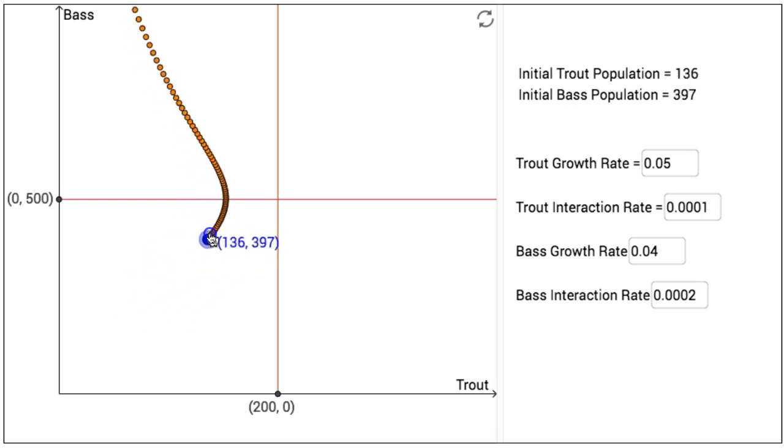If I drag that initial value point somewhere else, perhaps in the upper right quadrant of the graph, now my initial trout population is 323, and the initial bass population is 733. If I look at the trout population, the trout population seems to decrease slightly, and then increase, whereas the bass population decreases strictly.